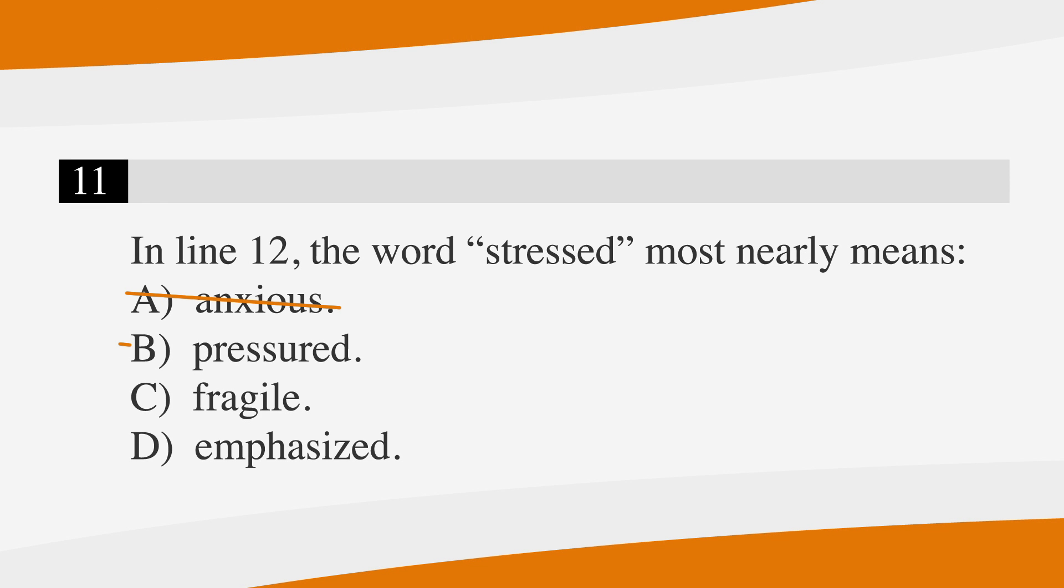Your job is to cross off as many wrong answers as you can and then pick from the remaining choices. Crossing off the wrong answers is going to be essential. Often the answer that you would write if this were a fill in the blank test isn't going to be there. And if you go looking for it, you might drive yourself nuts. But if it's hard to find the right answer, it's often going to be easy to find at least one or two wrong answers. After all, this is an open book test.